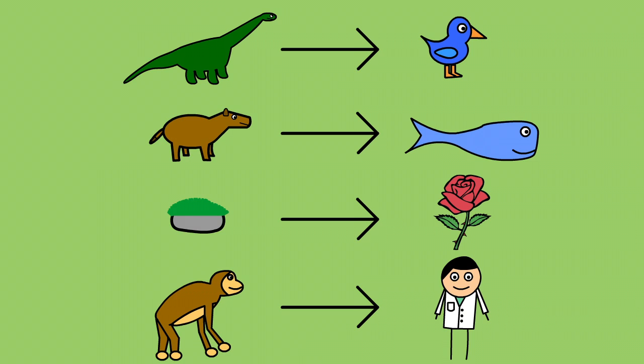The evidence supporting evolution by natural selection is extensive. The fossil record shows transitional species which connect dinosaurs to birds, land mammals to sea mammals, non-seed plants to seed plants, and even mammalian quadrupeds to bipeds.